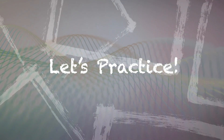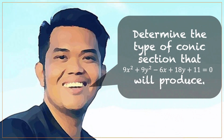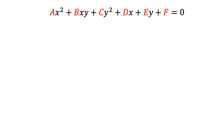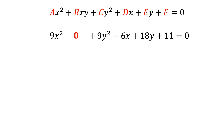Now let's practice what we have learned. Let's have the first conic section described by the general equation 9x² + 9y² - 6x + 18y + 11 = 0. Let's see what conic section it will produce. Following the suggested steps, first I need to identify the numerical value of A, B, and C. Using the general form of a conic section, I know that A is 9. Since we don't have the BXY term, the value of B is 0, C is 9, D is negative 6, E is 18, and F is 11. I will only focus on the numerical values of A, B, and C because they are what I only need to solve for the value of the discriminant.